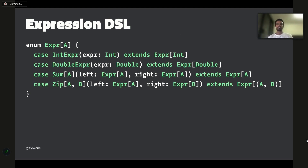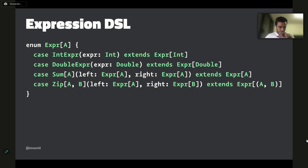Let's get into this expression DSL. This is a simple example which you can reason about in terms of the usability of ADTs and generalized ADTs and typically initial encoding. We're not getting into the details of those techniques, but rather the problems of using them. The expression DSL has an IntExpr, DoubleExpr, a Sum of two expressions having the same type, and a Zip node — used in many DSLs — which takes a left expression of type A and right expression of type B and makes it into a product or tuple.